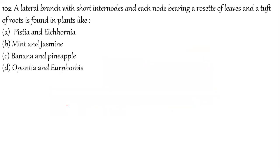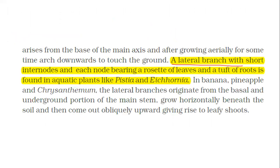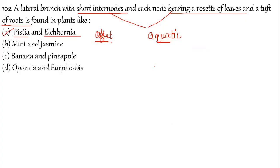Question 102: A lateral branch with short internodes, each node bearing a rosette of leaves and a tuft of roots, is seen in which plants? This describes aquatic plants. Pistia and Eichhornia are aquatic plants. This describes the formation of offsets as in the textbook — a lateral branch with short internodes bearing a rosette of leaves and a tuft of roots found in aquatic plants like Pistia and Eichhornia. Correct answer is option A.